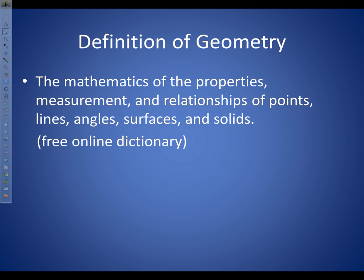The word geometry: technically, "geo" refers to the earth, and "metri" means to measure. Really what we're talking about is measurement — it came about to measure the earth — but we're making that a little more abstract in this class.